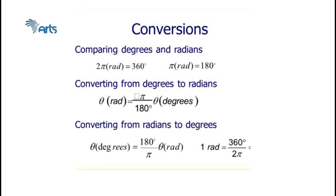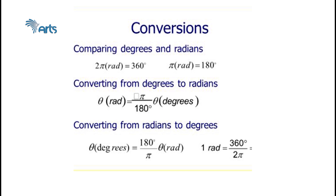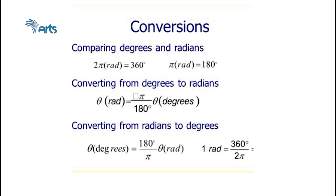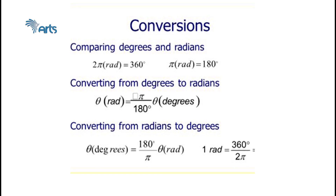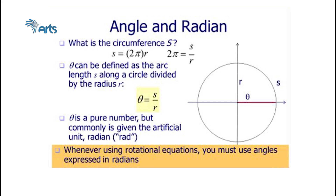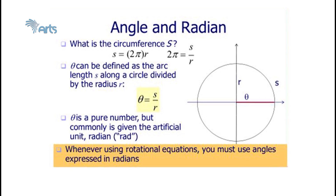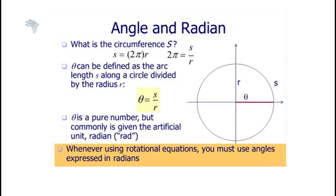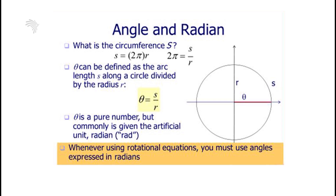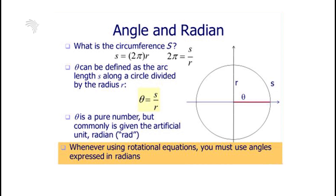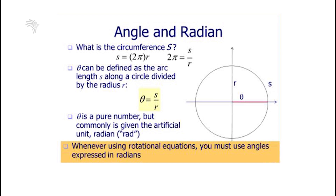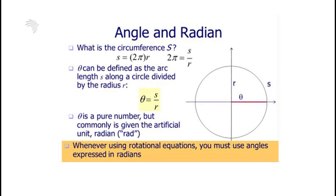One revolution equals 360 degrees and is equal to 2π radians. For instance, one radian is equivalent to 57.3 degrees. There is a relationship between the angle theta (angular displacement), arc length, and radius. When using rotational equations, you must express angles in radians. To find angular displacement theta, use the equation: arc length s divided by radius r.